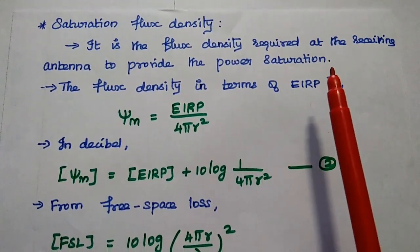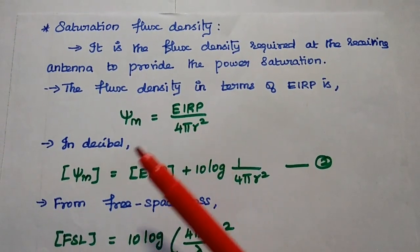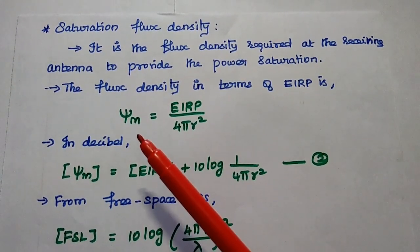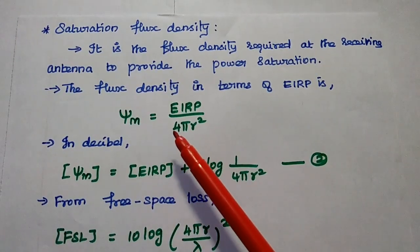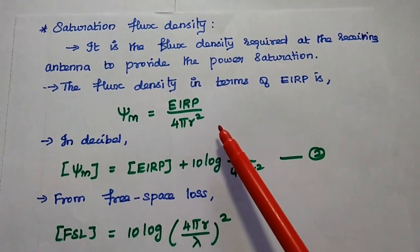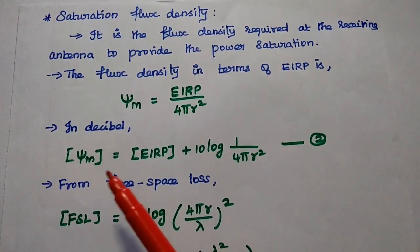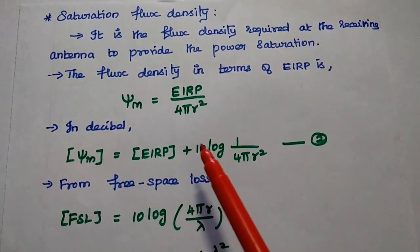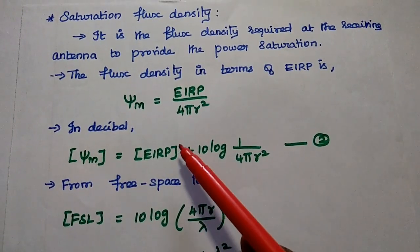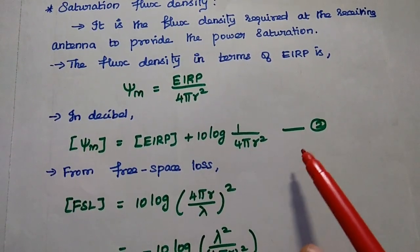Proper flux density at the receiving antenna can be obtained by maintaining the proper earth station EIRP. Here flux density is denoted as ψ_M — the required flux density to maintain power saturation. ψ_M equals EIRP of the earth station divided by 4πR². In decibels: ψ_M = [EIRP] + 10·log(1/4πR²). This is the second equation.